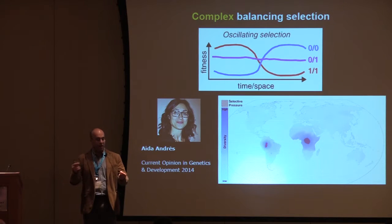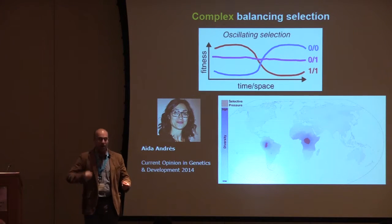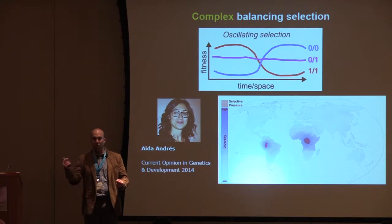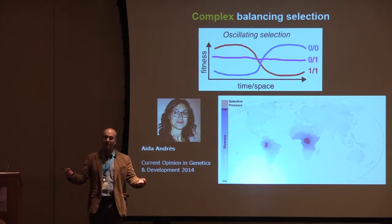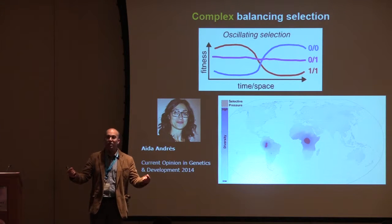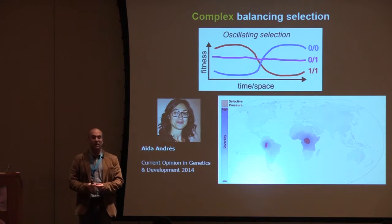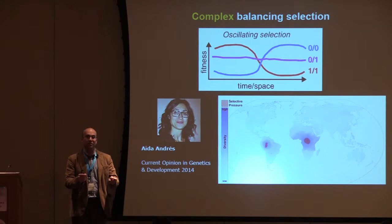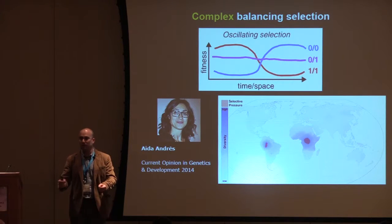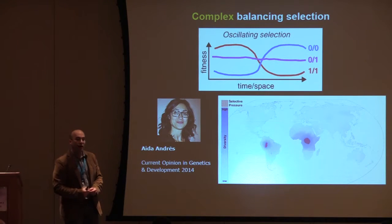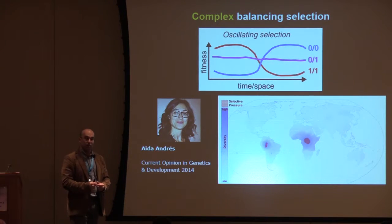Other types of complex balancing selection can involve trade-offs within physiology — where one allele has one advantage while another allele has a different advantage, depending on diet, pathogen pressure, or sexual selection context. This creates a cost-benefit dynamic maintaining variation in the population.